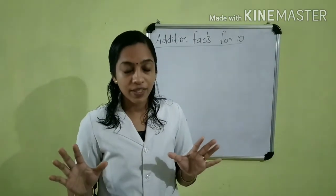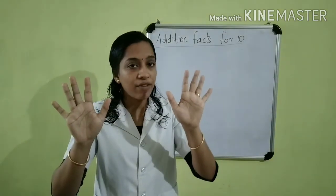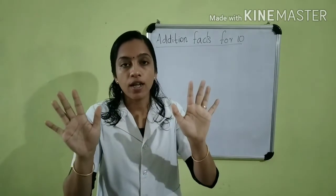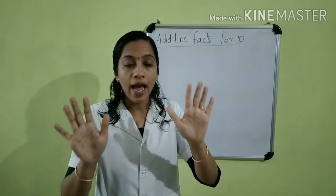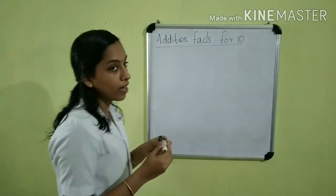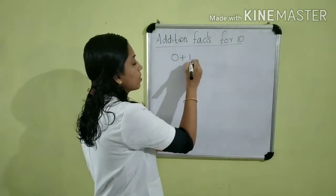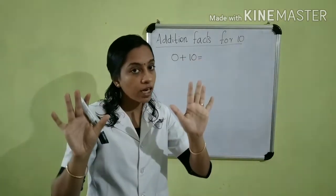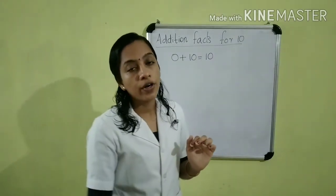Are you ready? Yes. Children, first I take 10 fingers. Can you see any folded fingers? No. All the fingers are extended. So the number of folded fingers is 0 and extended fingers is 10. We are going to add these two numbers. That is, 0 plus 10 is equal to 10.